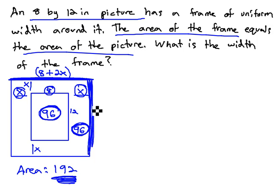Similarly, with the height, the height is 12 and there's an x on the top and an x on the bottom, which means in addition to the 12 that's already there, we have 2 extra x's from the frame, or 12 plus 2x.